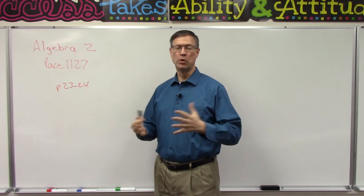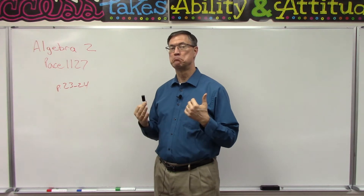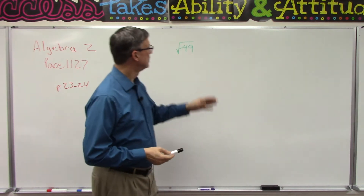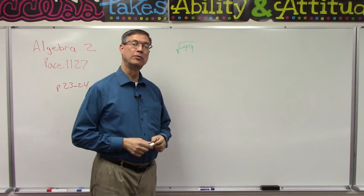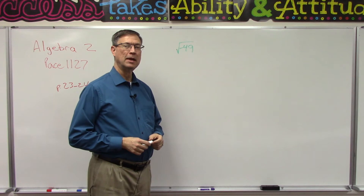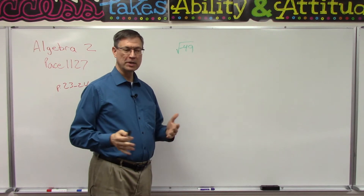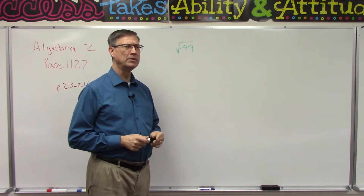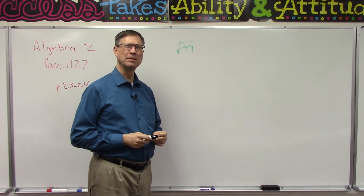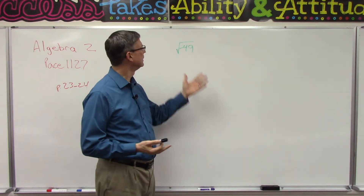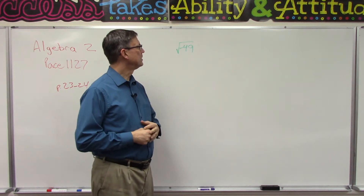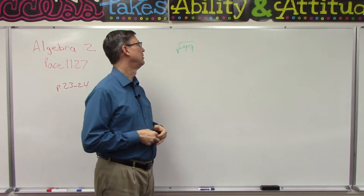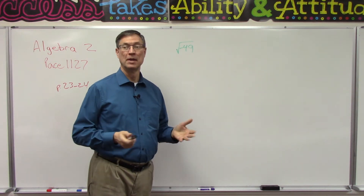If I asked you what is the square root of 49, you would say 7, right? Pretty easy — 7 times 7 is 49. So what if I said: what is the square root of negative 49? Whenever I ask my class that, my students every year struggle with it. Negative 7? No — because negative 7 times negative 7 is positive 49.